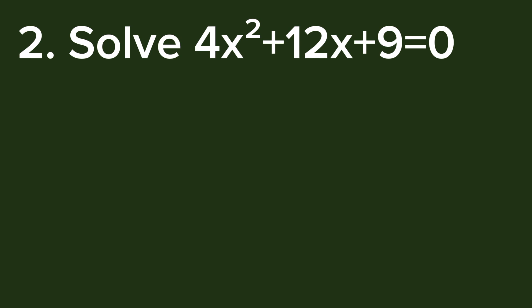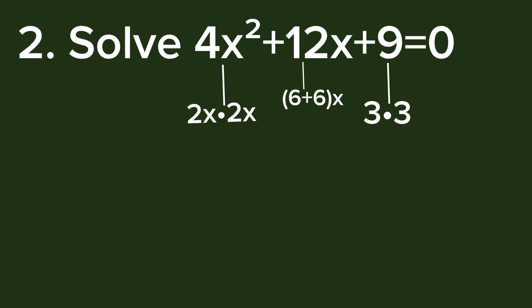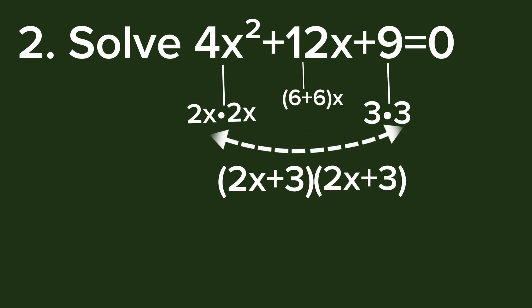To solve this we apply the same procedure. For 4x², the factors are 2x times 2x, and 9 is 3 times 3. The middle term is 6x + 6x. To match the factors of 9, we divide 6 by 2 to get 3, so the middle term gives us 3 + 3. Comparing, we get the factors (2x + 3) and (2x + 3).